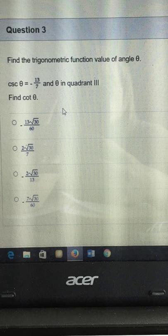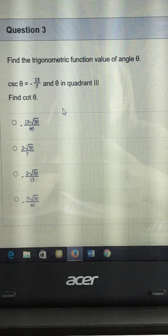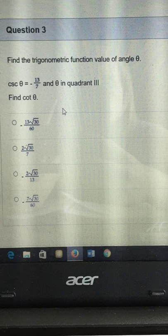Alright, here's a good question. They say that the cosecant of an angle is negative 13 over 7, and that the angle is in quadrant 3, and they want to find cotangent.